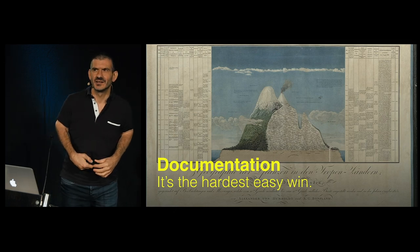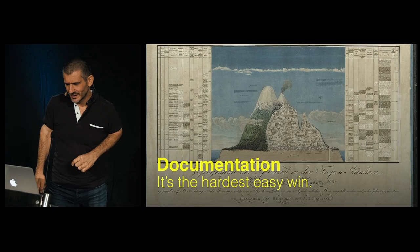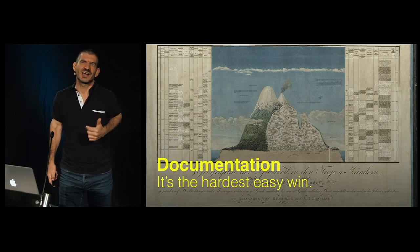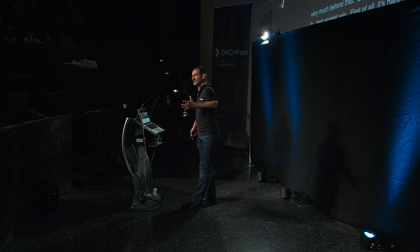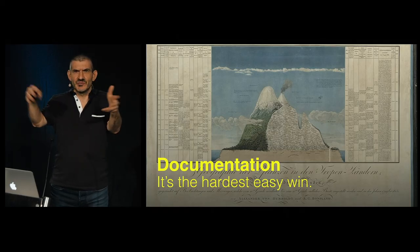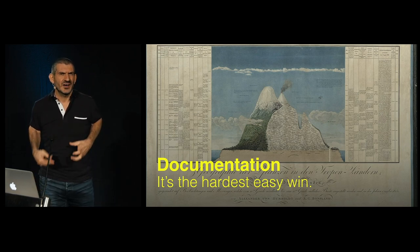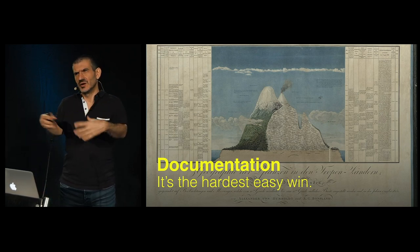Documentation is the hardest easy win. It's an easy win, but it's really hard to get. It's hard to write in a way that people understand — that is much more difficult than I thought. Documentation is something like math: examples go a really long way. Just documenting your functions without giving guidance on how to apply them is really hard.